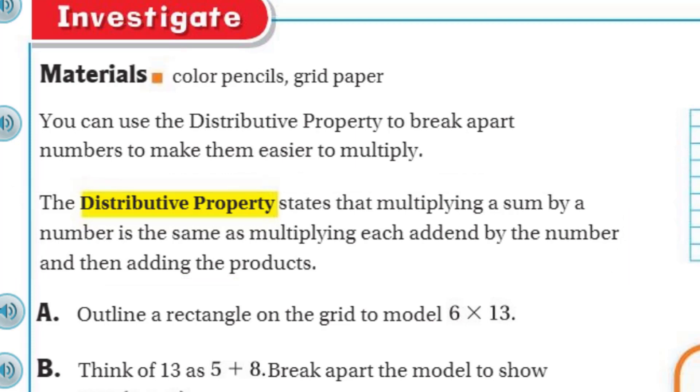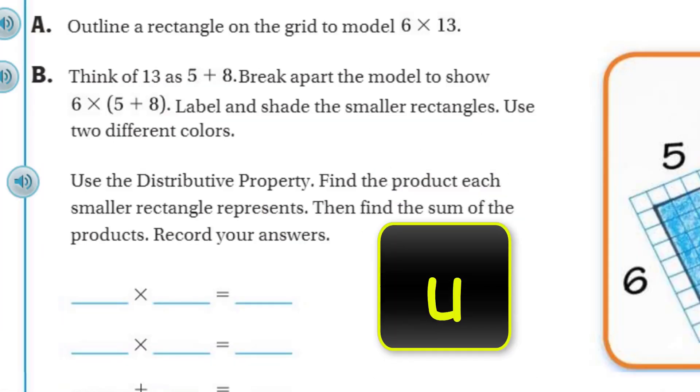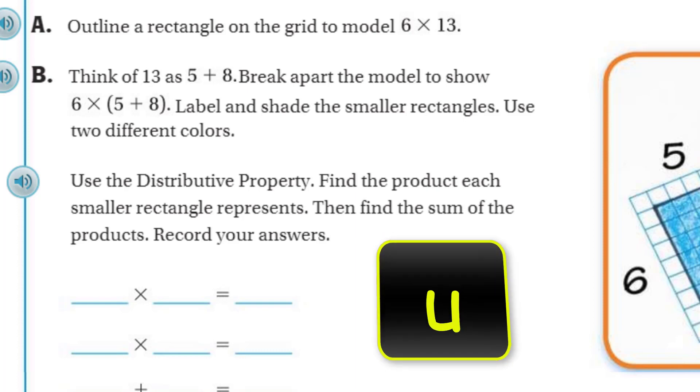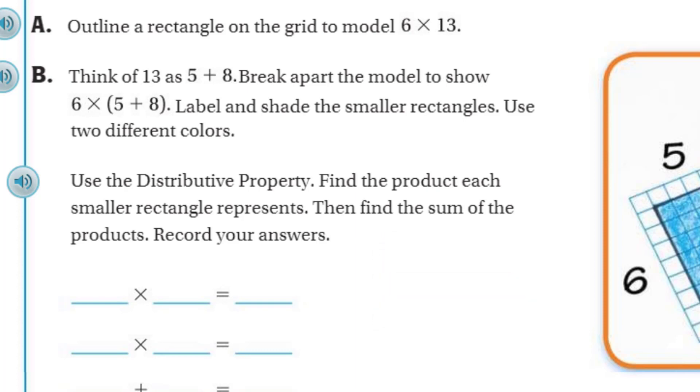I know this probably went right over your head. Right? I mean, Mr. Warra, I was with you until, what are you talking about? So let's go ahead and look at this. This is A. Outline a rectangle on the grid to model 6 times 13. I'm going to go ahead and do that. As you can see, I put my rectangle on the grid, and it's to model 6 times 13. So here is 6. Up here, I have 13. 6 times 13.